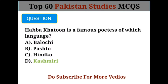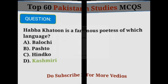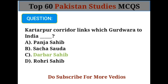Heer Ranjha is a famous piece of which language? Option D: Kashmiri language. Kartarpur Corridor links which Gurdwara to India? Option C: Darbar Sahib.